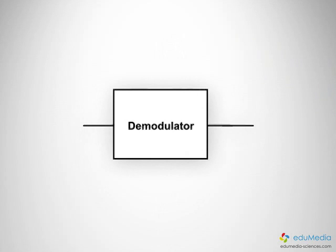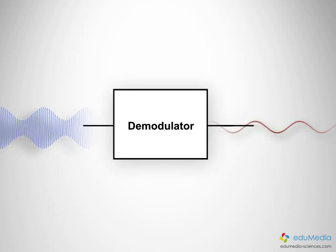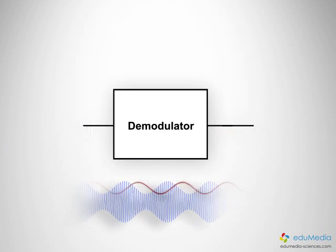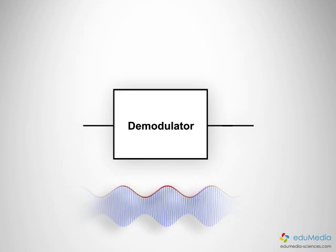It receives, at the entry, a signal that is amplitude modulated. This is a high frequency signal. At the exit, the demodulator delivers a useful signal of low frequency, which is none other than the envelope of the modulated signal.